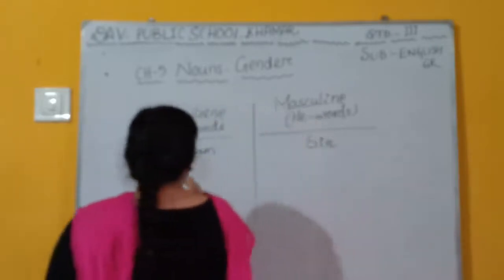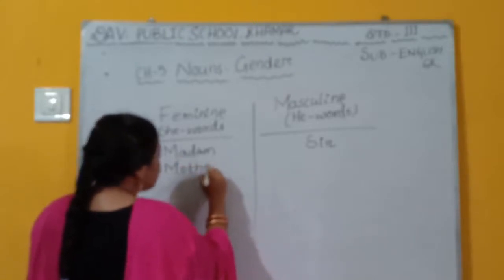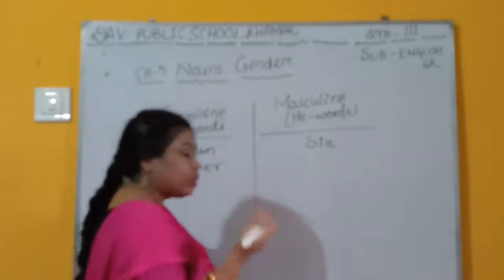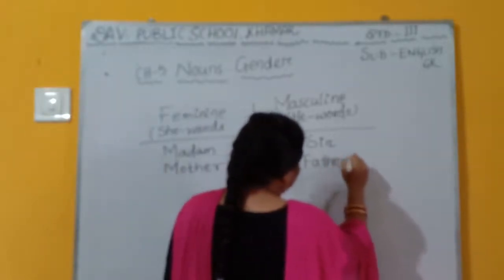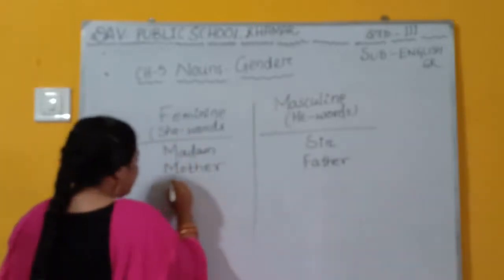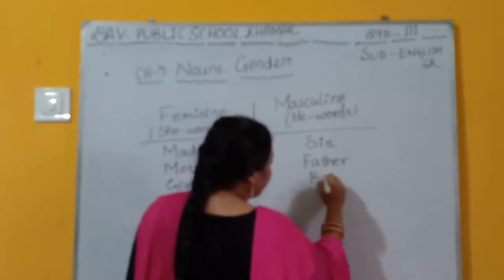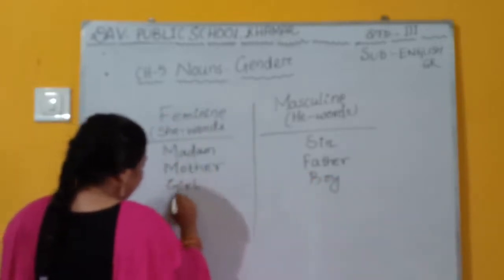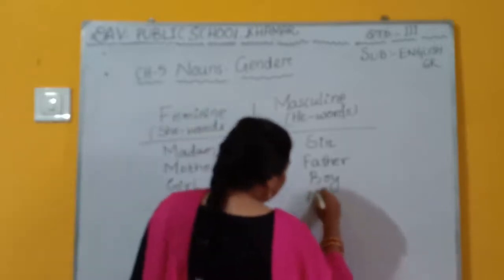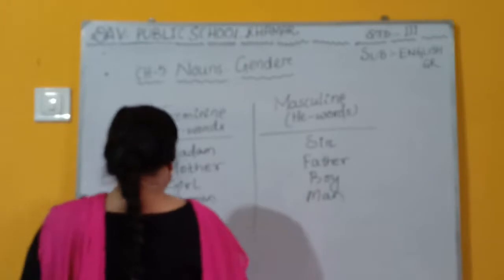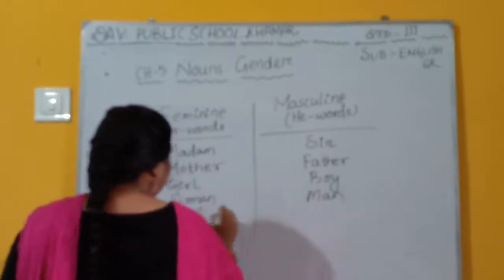Similarly, do you have a mother? Mother is feminine, and the masculine of mother is father. In the same way: girl, king. The feminine of king is queen.